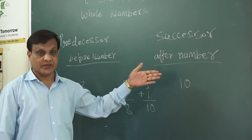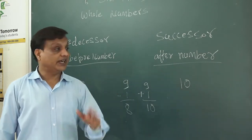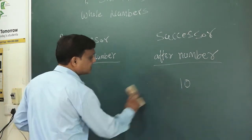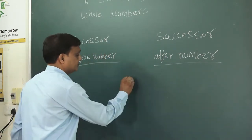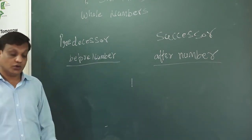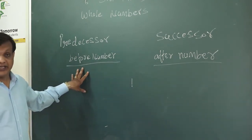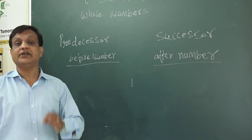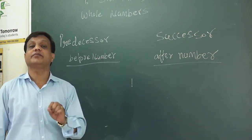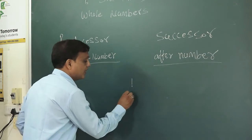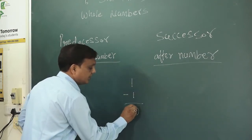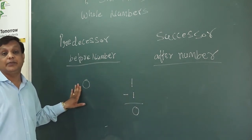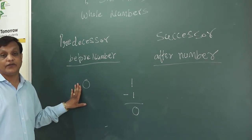So you subtract or add 1 to find the predecessor and successor — that is the before number and after number. Every number has a predecessor and successor. If I ask you what is the predecessor of 1, according to this rule we subtract 1 from the given number. So 1 minus 1 equals 0. So 0 is the predecessor of 1. Here the whole number is helping us to find the predecessor of 1.